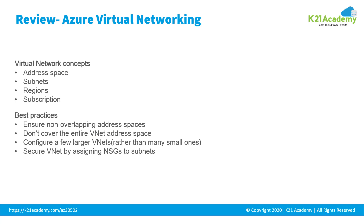Virtual networking is used to provide private connectivity between Azure virtual machines and other services. Network addresses and subnets are not trivial to change once set up. If you plan to connect your private company resources to Azure services, you will have to consider the topology before putting any VMs into place. Azure VNet enables many types of Azure resources such as virtual machines to securely communicate with each other, the internet, and on-premise networks.